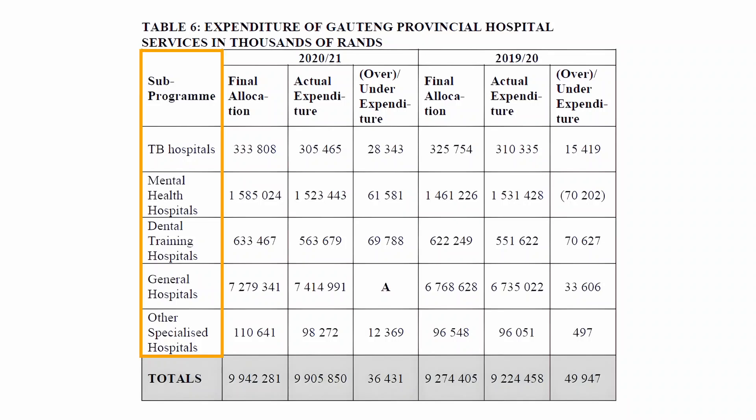The first column of Table 6 lists the sub-program, which consists of TB hospitals, mental health hospitals, dental training hospitals, general hospitals, and other specialized hospitals.